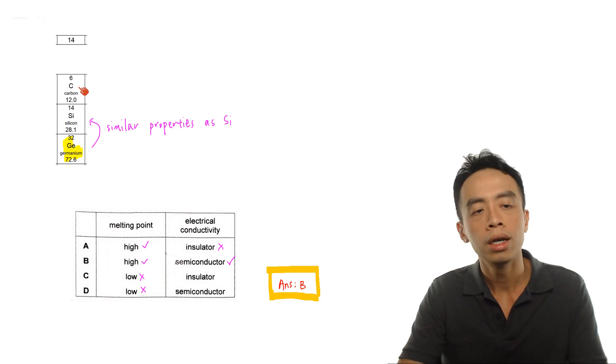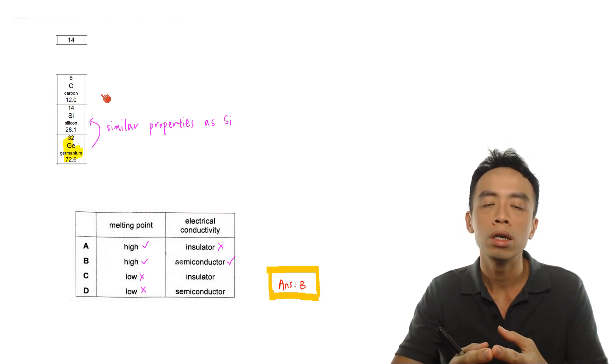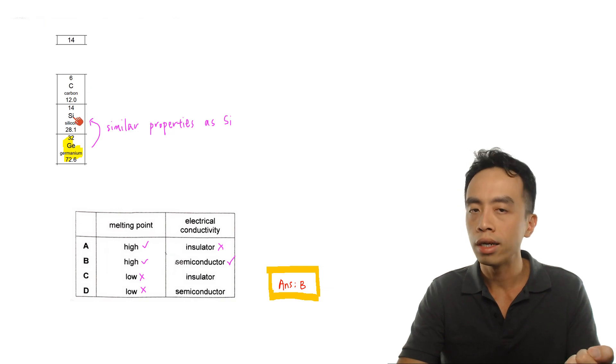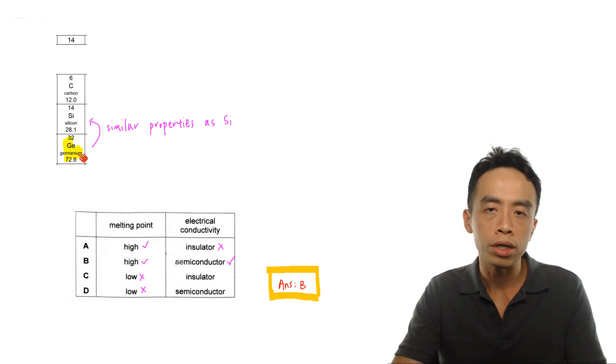If I consider carbon as an element, it will exist as graphite or diamond. All these elements involving carbon have very high melting points and exist as giant molecules. Carbon is a giant molecule, silicon is a giant molecule, so germanium is expected to also be a giant molecule, so the melting point is expected to be high.